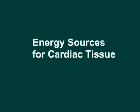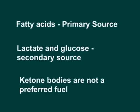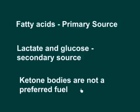Dr. Mungli here. In this video I will be explaining energy sources for cardiac tissue and how those energy sources are regulated in cardiac muscle. The primary energy source for cardiac tissue is fatty acids, accounting for 60 to 80 percent of the energy for cardiac contraction, coming from oxidation of fatty acids. The rest of the energy comes from lactate and glucose oxidation, which can be considered secondary sources. Cardiac tissue generally doesn't prefer oxidation of ketone bodies, simply because ketone bodies are spared for the nervous system and other tissues during starvation.